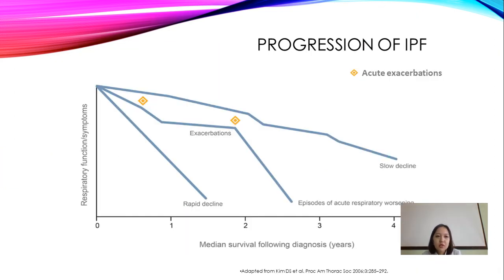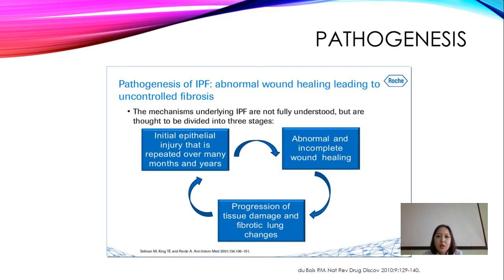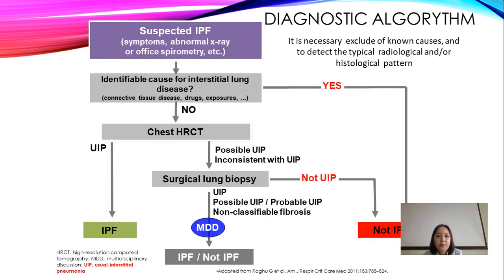This figure shows the progression of IPF with chronic and acute exacerbations. The pathogenesis of IPF involves abnormal wound healing leading to uncontrolled fibrosis. Initial epithelial injuries are repeated over many months and years, leading to abnormal and incomplete wound healing, which drives progressive tissue damage and fibrotic lung changes.